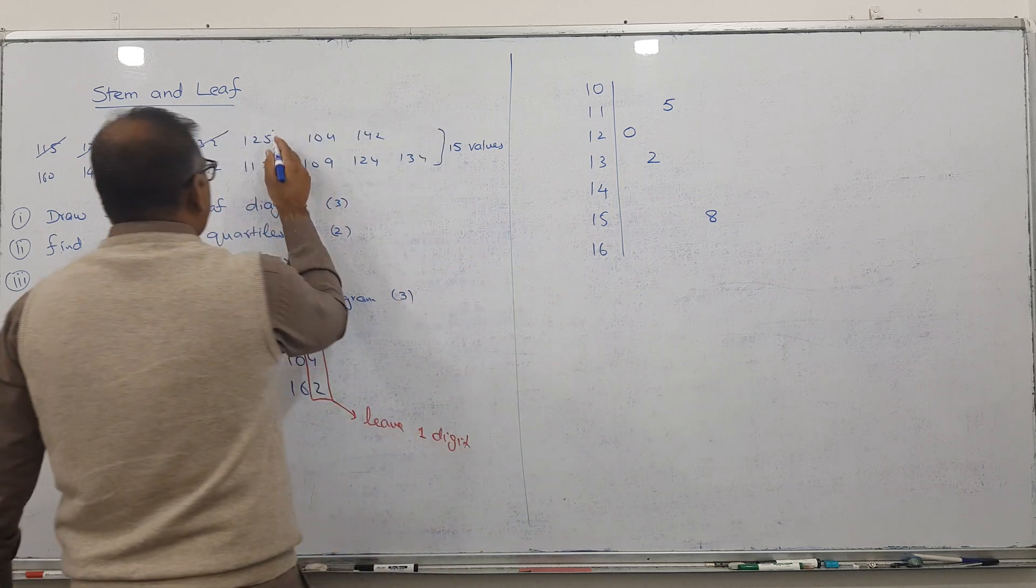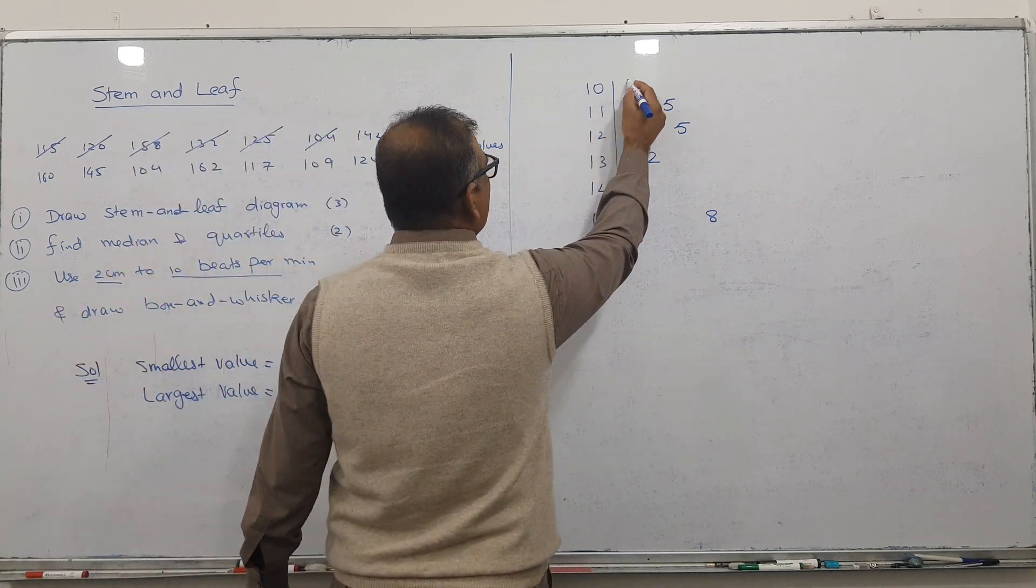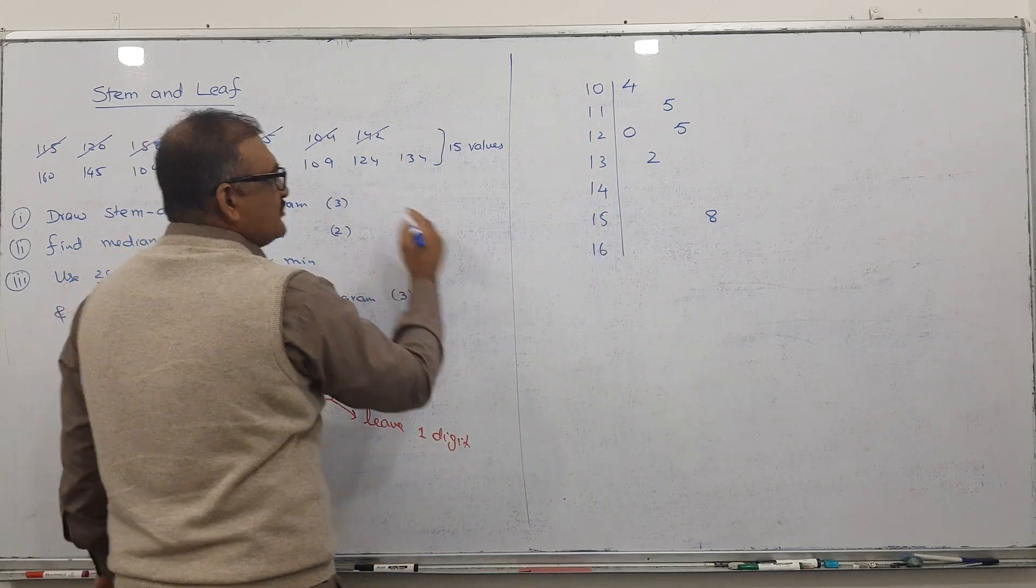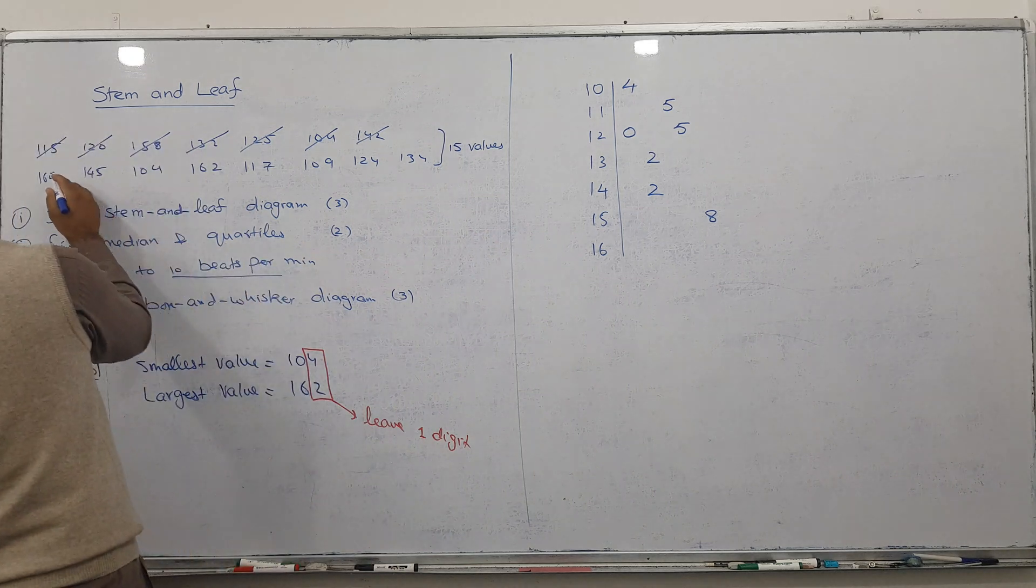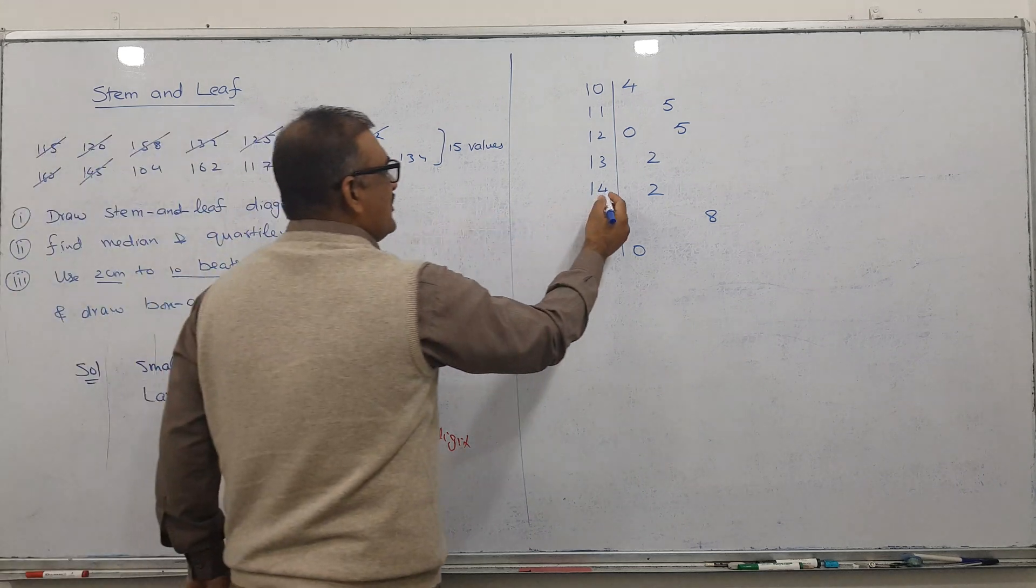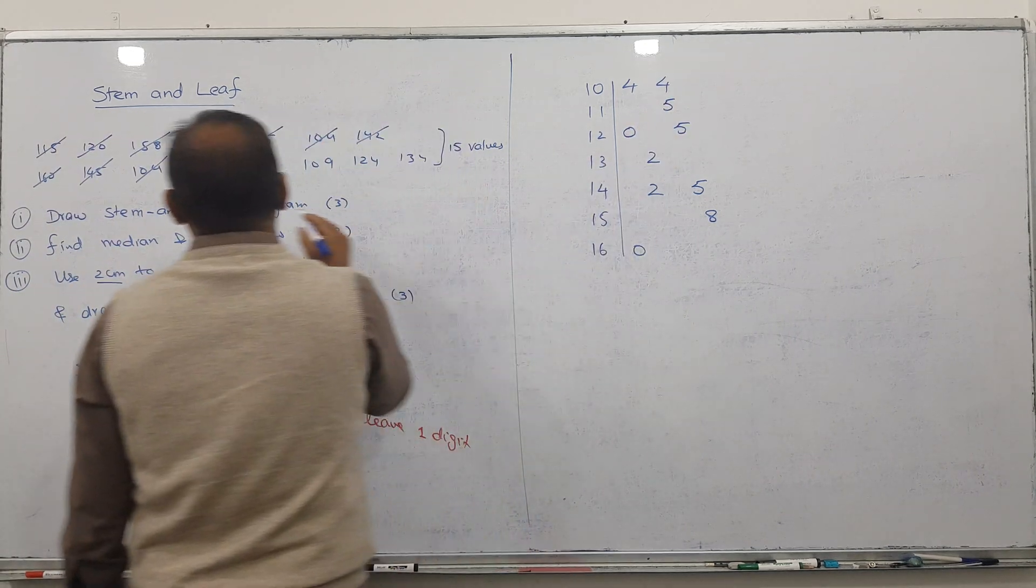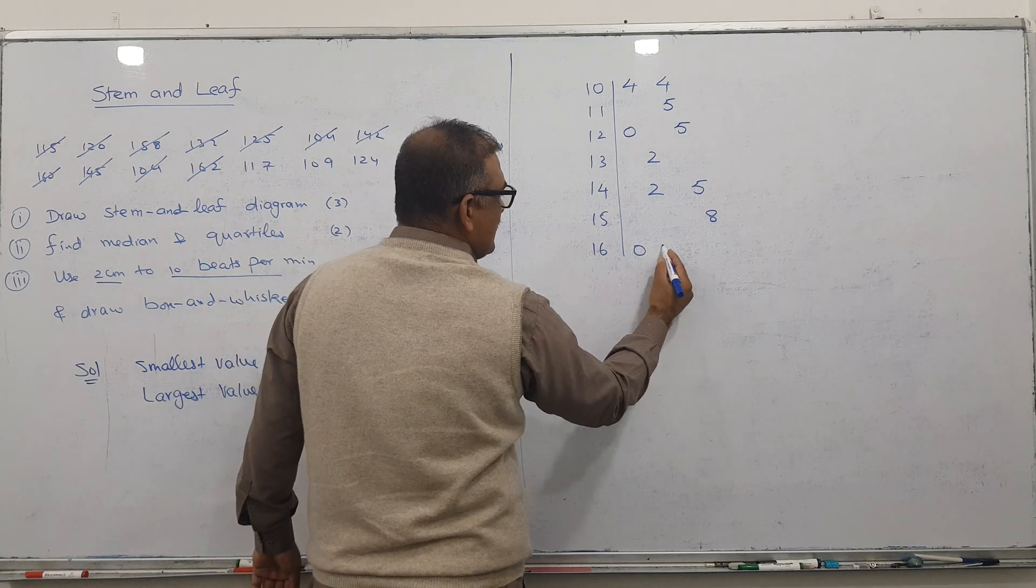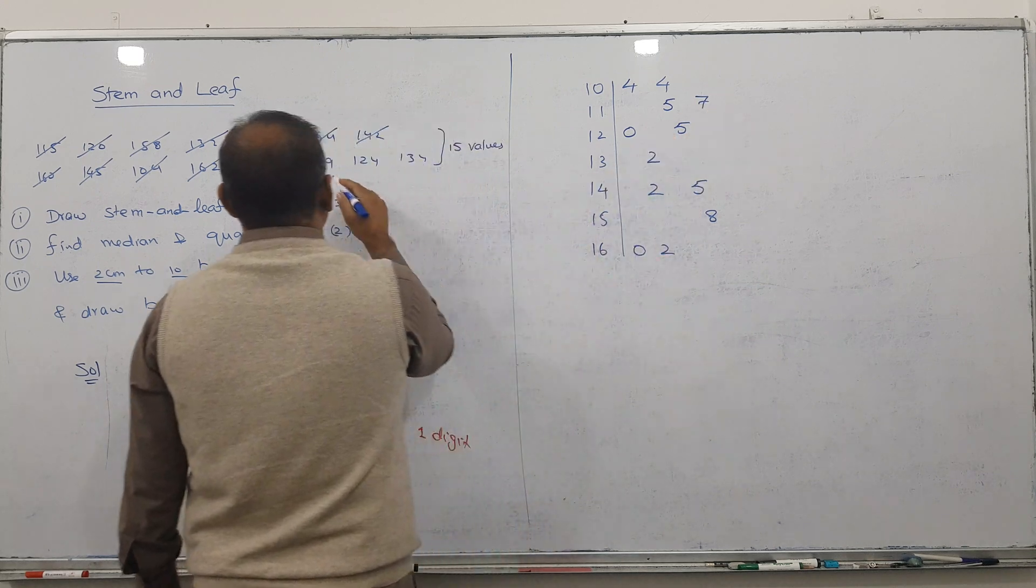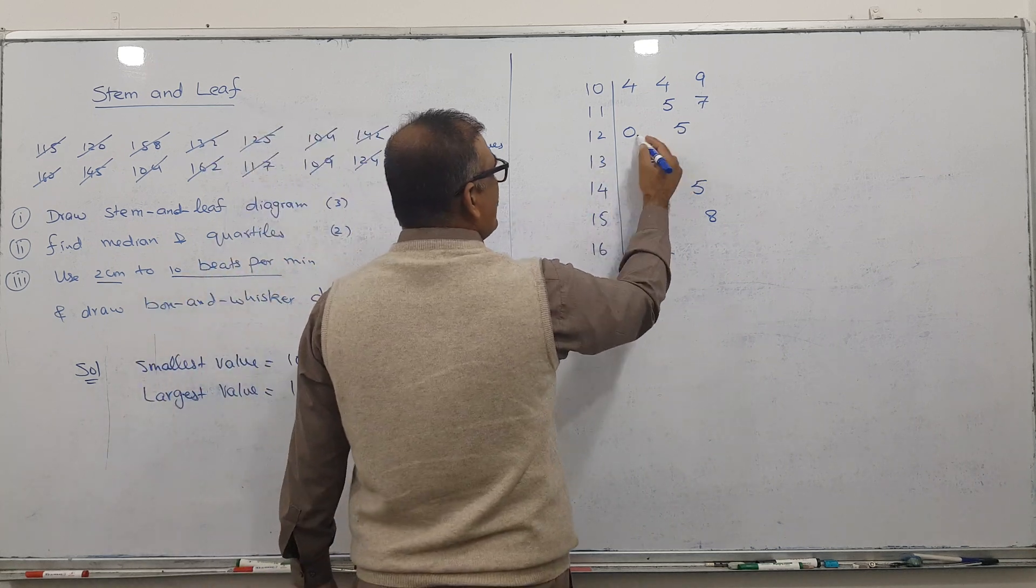Next is 125, 144, 142. 160 - 0 is close to the line. 145, so 4 and 5 are coming here. 104, I write 4 here. 162, so 2 comes here. 117, 5 comes here. 109, after 4 here. 124 comes in the middle.